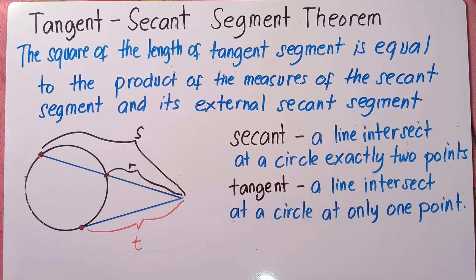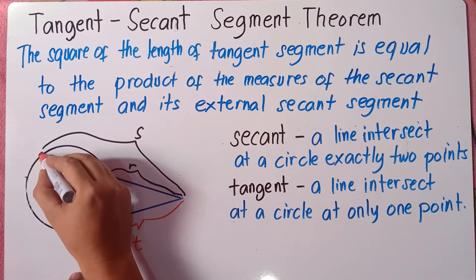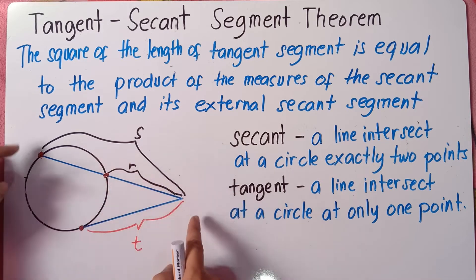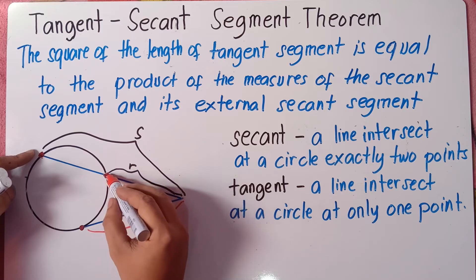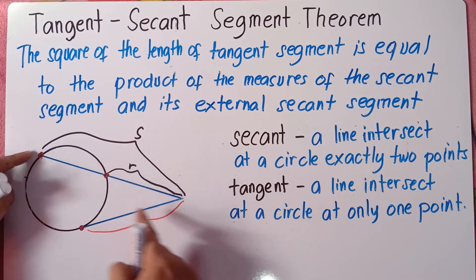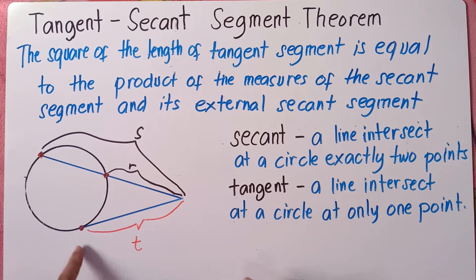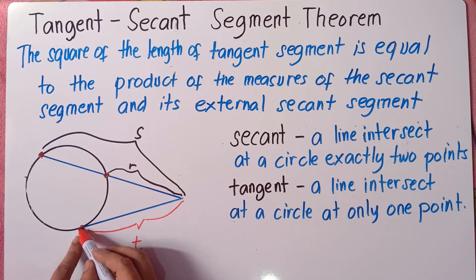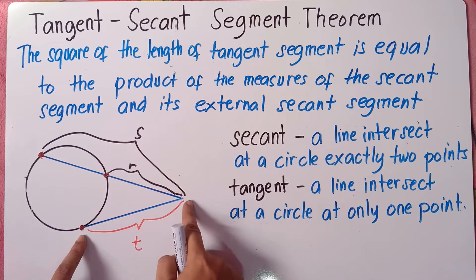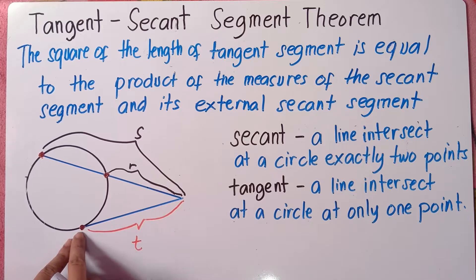Why is it the secant? Because there are two points intersecting the circle. As you can see, there's a line right here and there are two points intersecting the circle with this particular line. And for the tangent, there's only one point intersecting the circle. So this is the point and this is the line — we call it the tangent. Why is it tangent? Because there's only one point intersecting the circle.